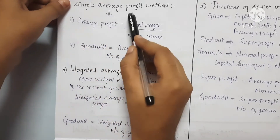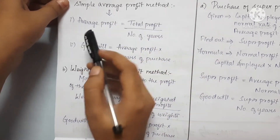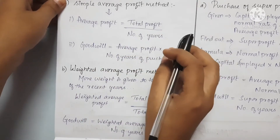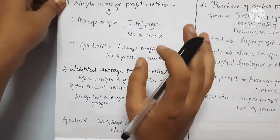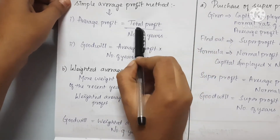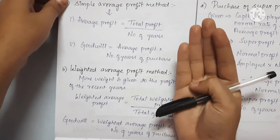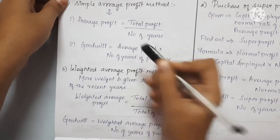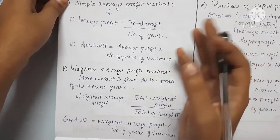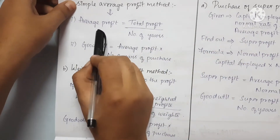The Simple Average Profit Method: we need to calculate the profit of 3 years or 4 years. We need to find the total profit divided by the number of years. For example, 4 years of profit divided by 4, or 2 years of profit divided by 2. So we need to divide to get the average profit.